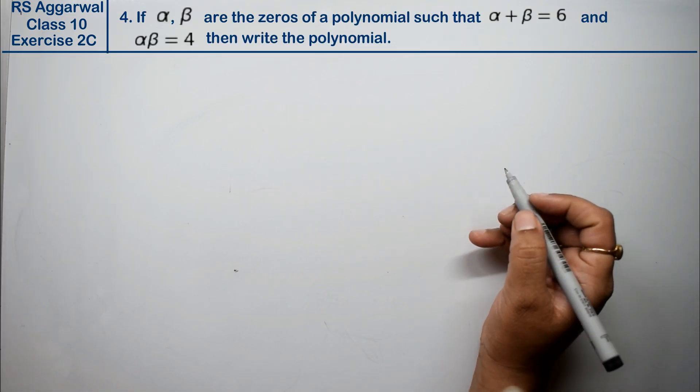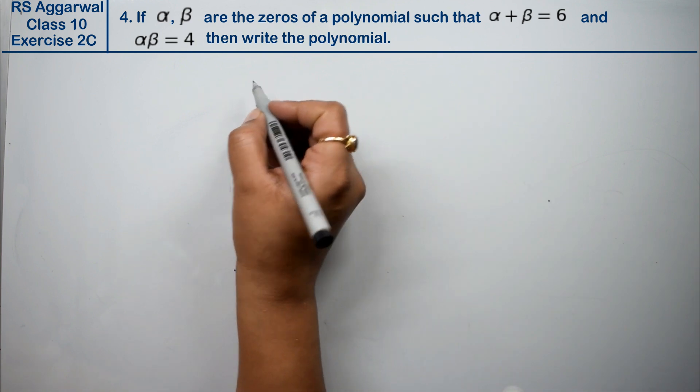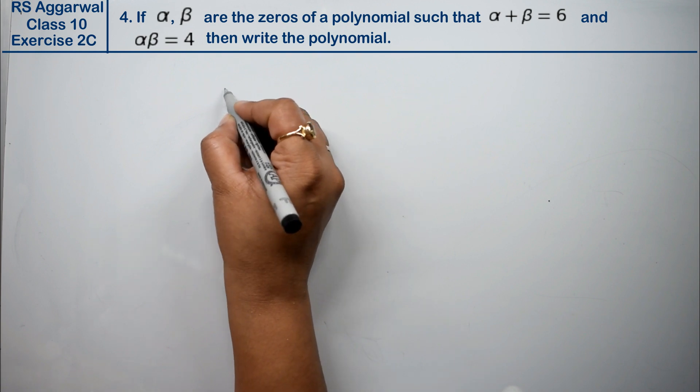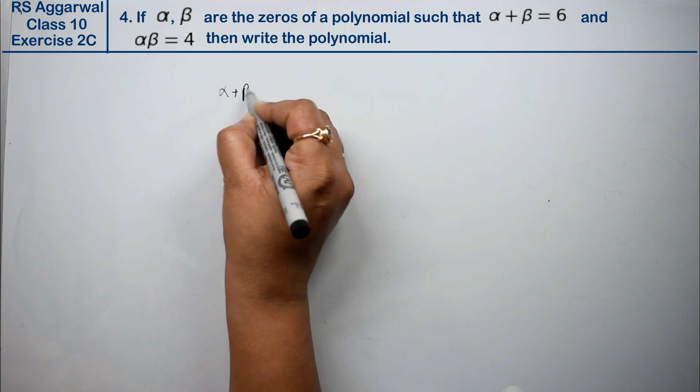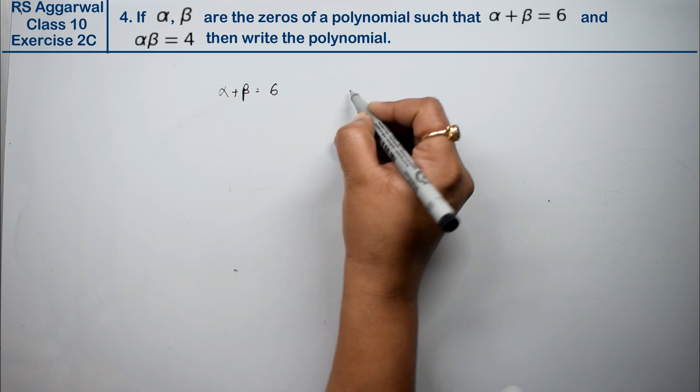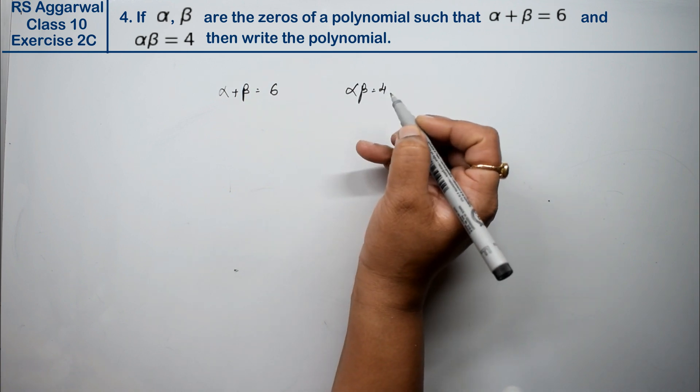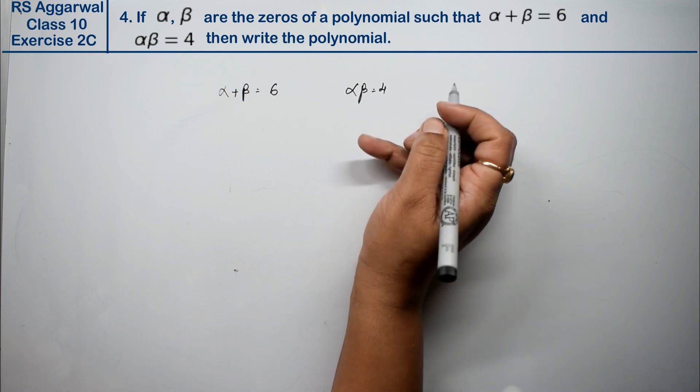Let's do question number 4 of exercise 2C, that is polynomial. Question number 4: if α and β are the zeros of the polynomial such that we know α and β are two zeros of the polynomial, such that α + β is given as 6, and αβ is given as 4. Then what do we have to find? Then write the polynomial, and we have to write its expression, f(x).